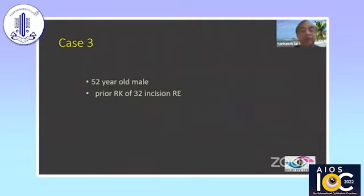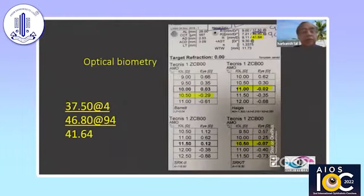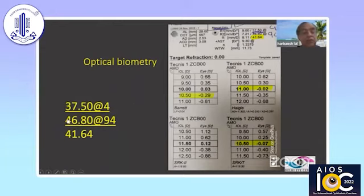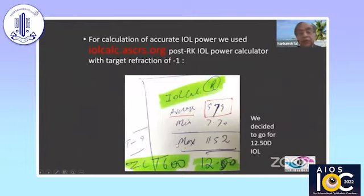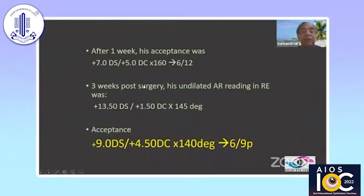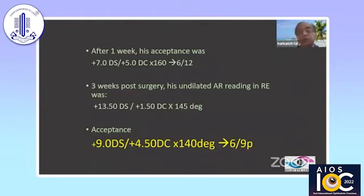This is another patient with prior 32-incision RK. The optical biometry showed 37.5, 46.80, and 41.62 diopters, and the power we were getting was 10.5. If you see a reading of 46.80, that means you are measuring at an area of ectasia. Once we did the IOL calculation, the average power was 9.79 and maximum was 11.52. We planned for 12.5 with toricity correction. Postoperatively, the undilated refraction was plus 13.5, plus 1.5, and the accepted refraction was plus 9, plus 4.5 — showing how hyperopic the patient was, because we had inadvertently measured the keratometry of the ectatic area instead of the flat area, which was around 36.5.